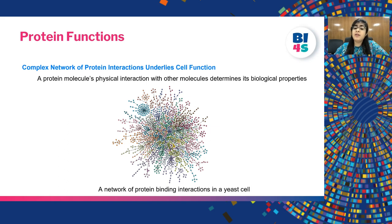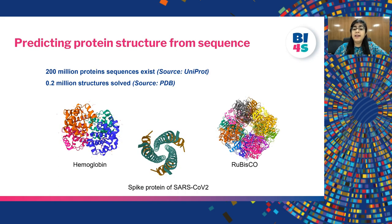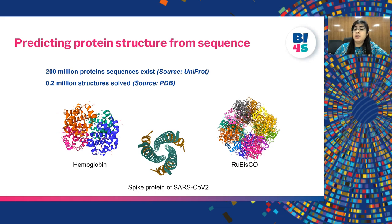Protein sequence determines protein structure and function. There are a total of 230 million proteins that exist in the protein database, but 3D structures are known for only about 0.2 million of them. This means there is a huge gap in the understanding of protein structure and function. Predicting protein structure remains one of the biggest challenges in biology. But why does it even matter?